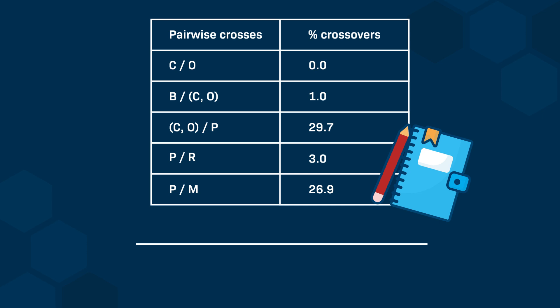Let's look at an example of a genetic map. The first genetic map was published by a graduate student, Peter Sturtevant, who was a member of Morgan's research group. Sturtevant used pairwise crossing to determine the position of six genes denoted as B, C, O, P, M, and R, found along the X chromosome. The table shows the experimental data: he found no crossover when looking at pairwise crossing between the C and O alleles, meaning C and O had the same position on the chromosome.